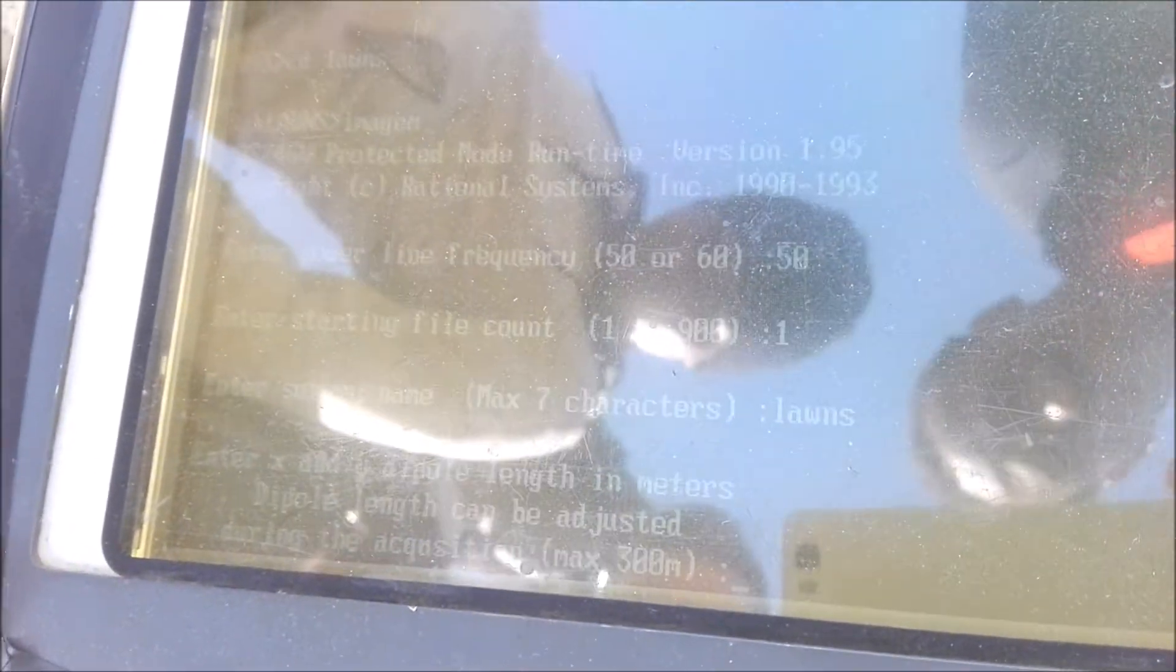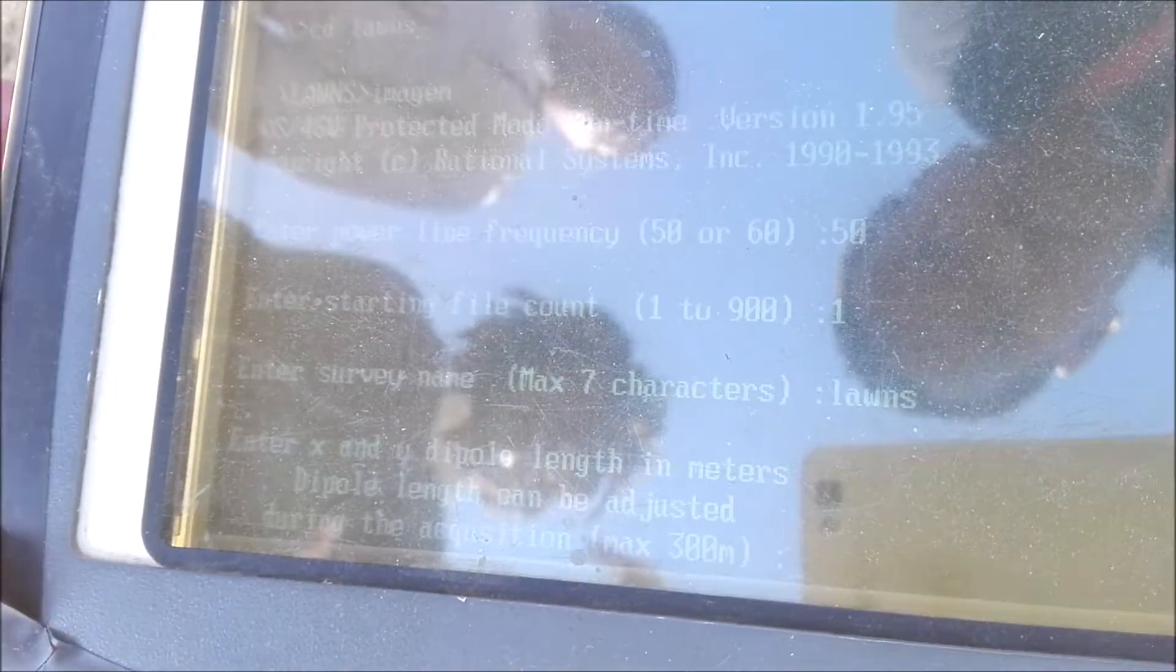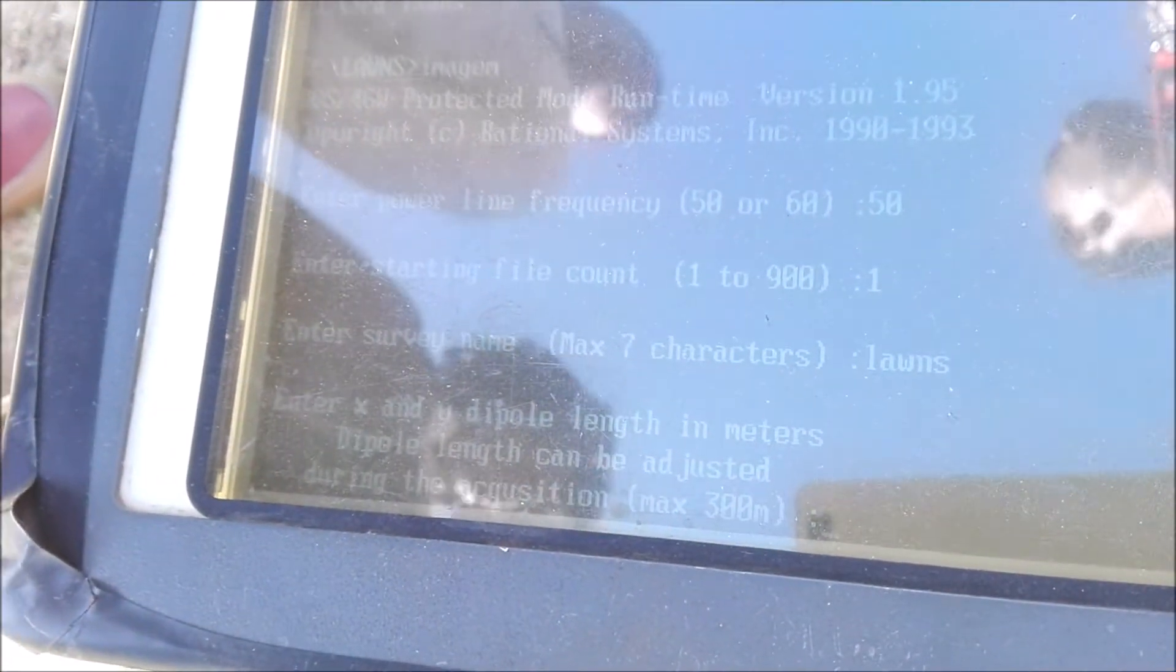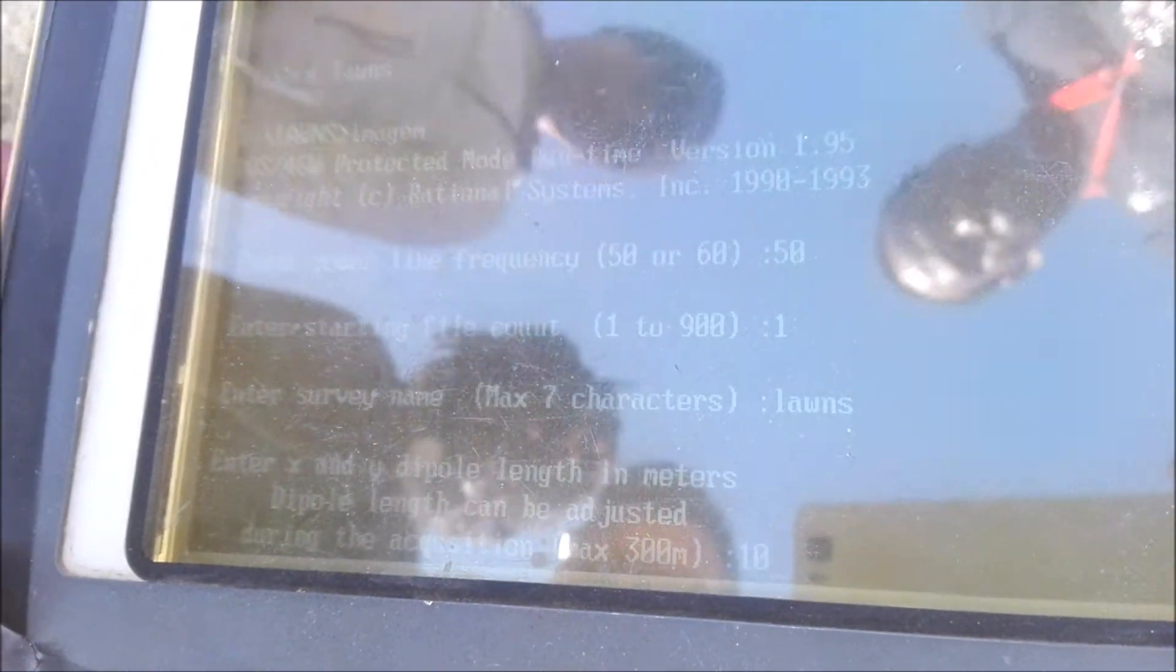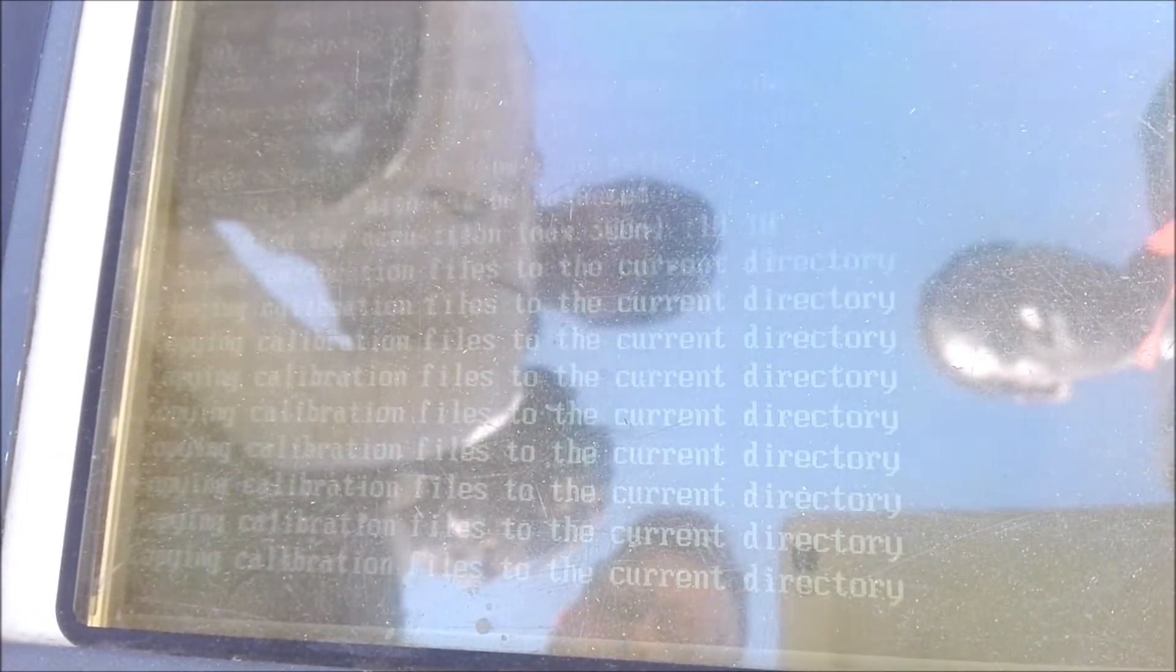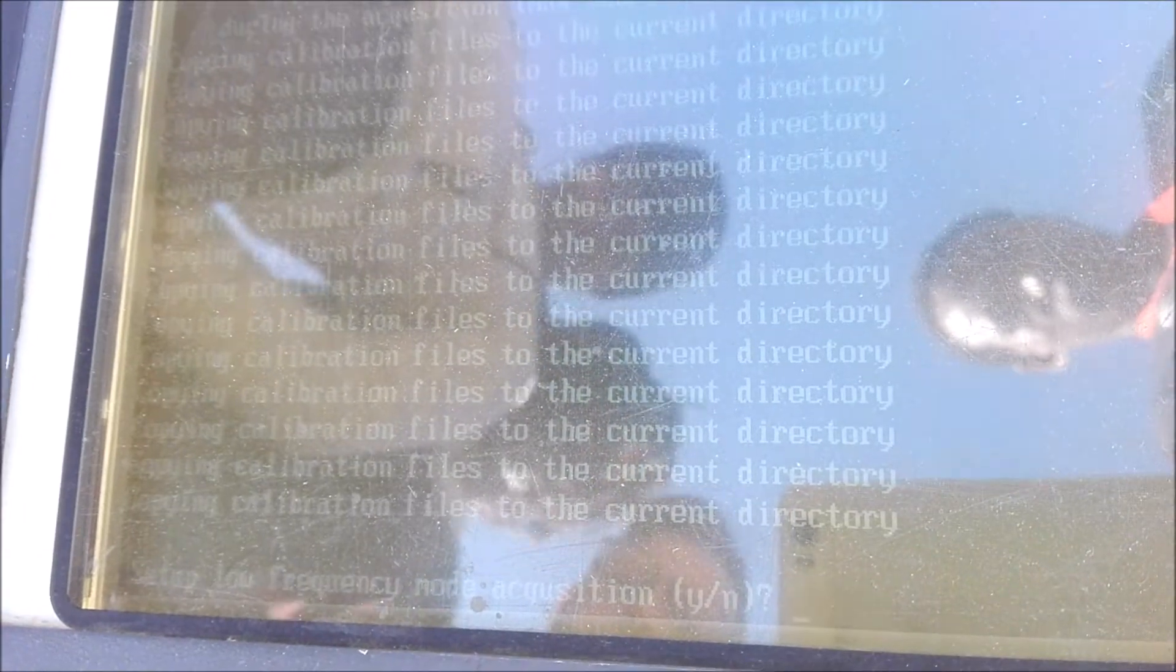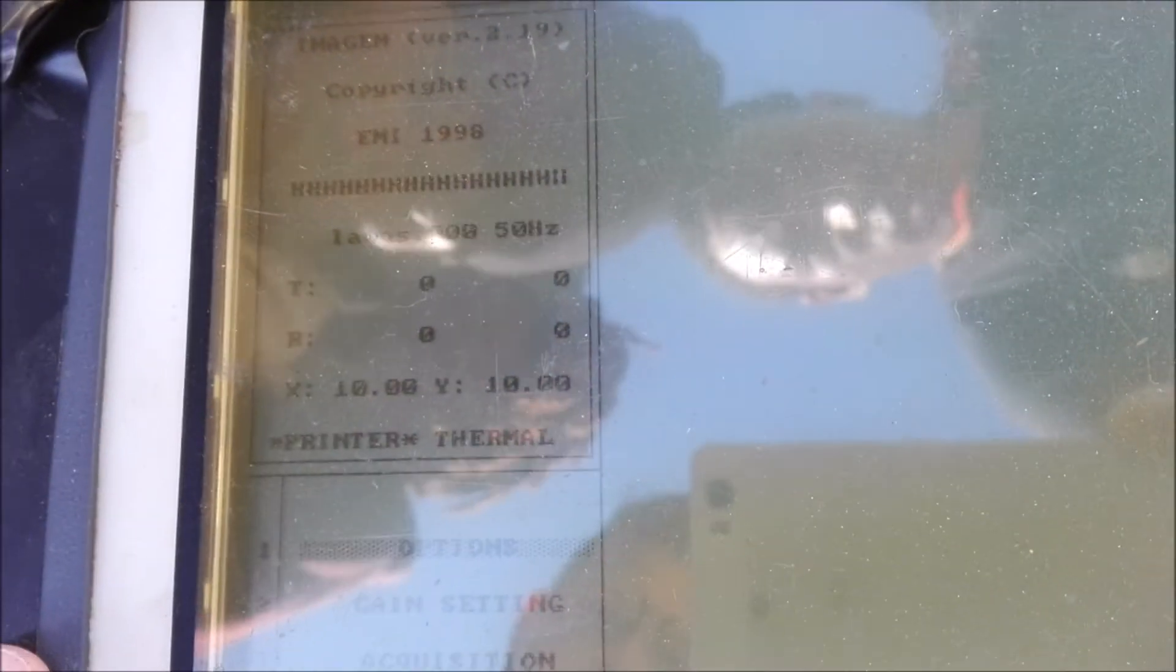Okay, so now it's going to ask us, enter x and y dipole lengths in meters. So you have to put the two lengths. So this is 10, right? Yeah. So it's 10 for the x and space, 10 for the y. Okay, do that. Now it's opening the directory. Then ask, are we doing low frequency mode? No, because we've got the high frequency cards. So just press N. Okay, so now you'll see it should have, so it's lawns, a 50 hertz power line. It's x and y is 10 and 10, okay?